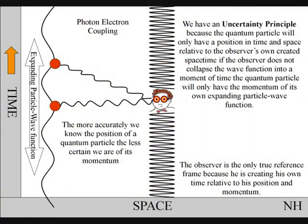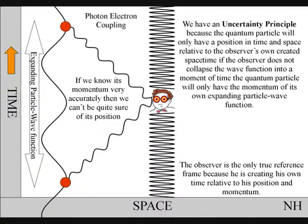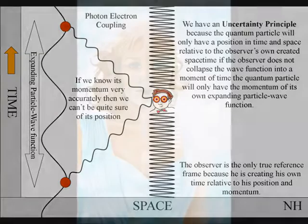Therefore, the more accurately we know the position of a quantum particle, the less certain we are of its momentum. And if we know its momentum very accurately, then we can't be quite sure of where it is.